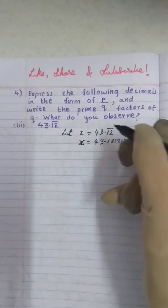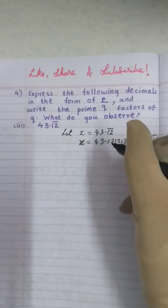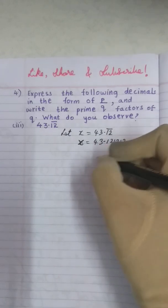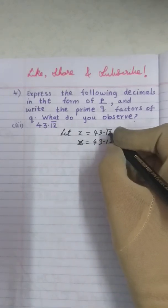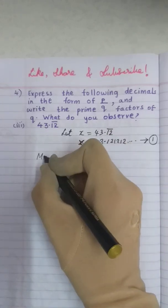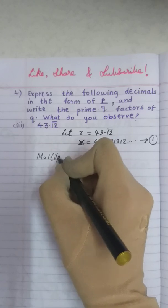If periodicity is 1 multiply it with 10. If periodicity is 3 multiply it with 1000. So it depends on the number of digits how many zeros you have to multiply. Since here two digits bar is there, that is periodicity is 2, we are going to multiply equation 1 with 100.